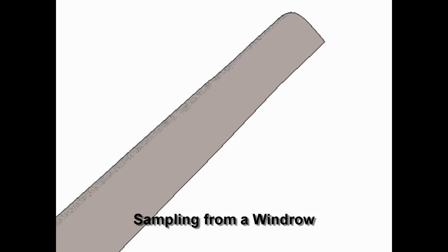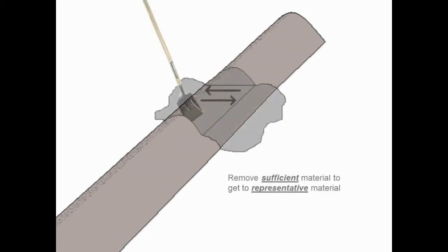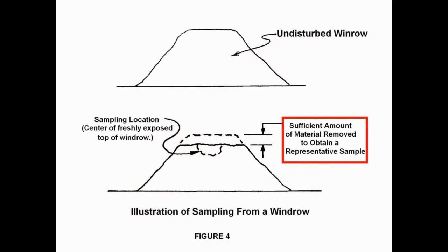Sampling from a windrow. The following slides illustrate the method used to sample a windrow. At each point in the windrow where a sample is to be taken, remove sufficient material from the top of the windrow so that a representative sample can be obtained from the center of the freshly exposed top of the windrow using a square point shovel.